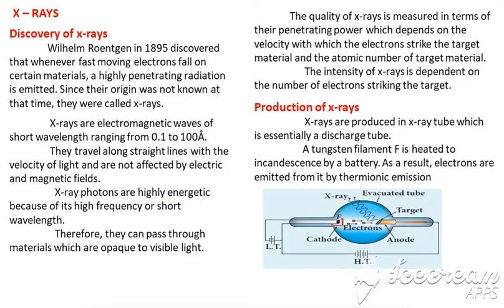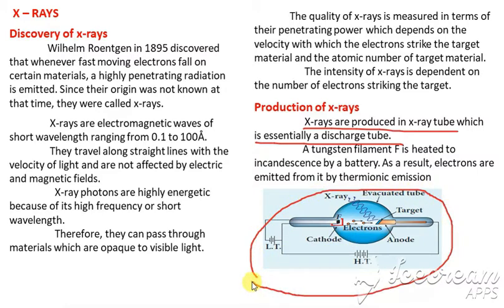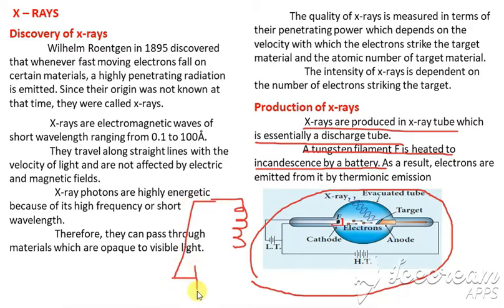Next, we are going to see about the production of X-rays. X-rays are produced in an X-ray tube, which is essentially a discharge tube. The filament F is heated to incandescence by a battery. As a result, electrons are emitted from it by thermionic emission.